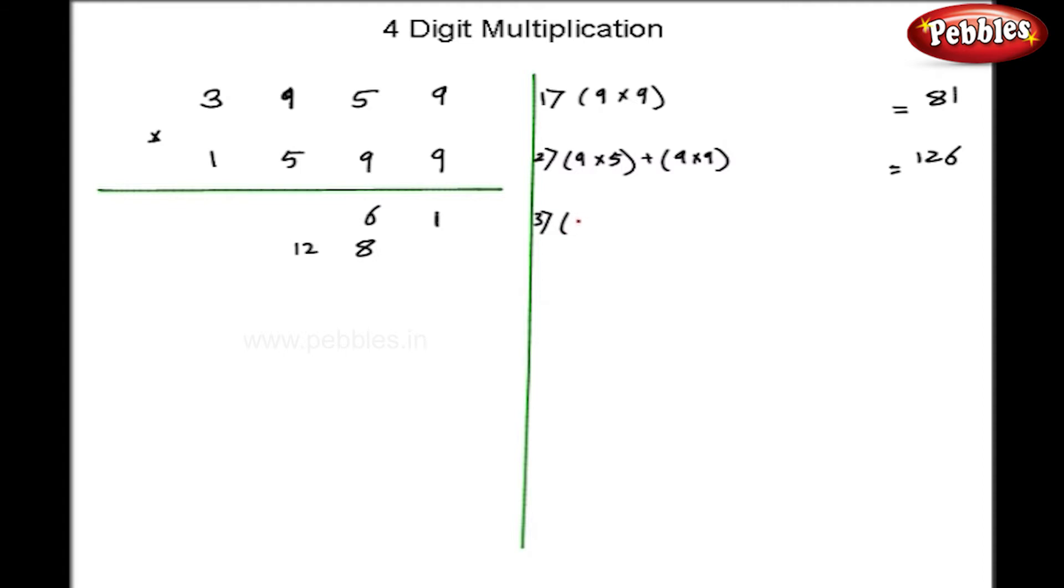At the third step, 9 into 9 plus 9 into 5 plus middle column that is 5 into 9. I get 171. 17 is a carry over and 1.